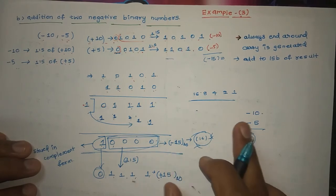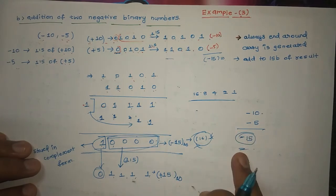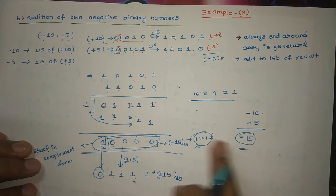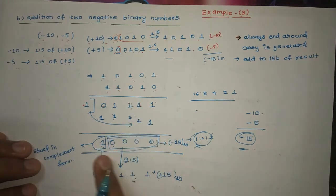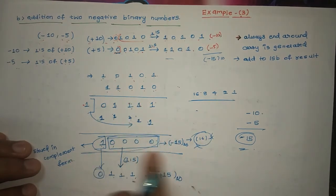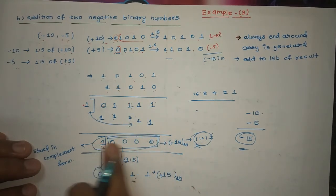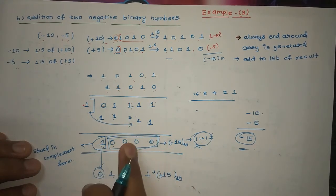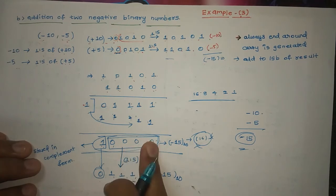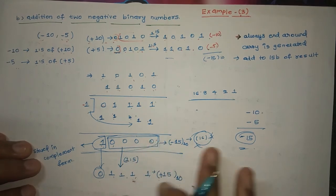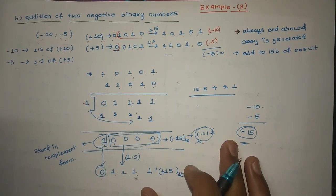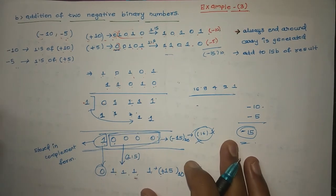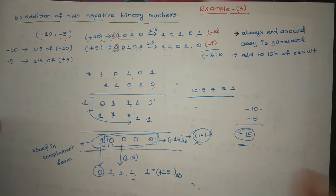So to verify: minus 10 plus minus 5 equals minus 15. Both results match. Negative numbers are stored using one's complement format — that is the reason we got a negative result. That's it for this video, thank you.